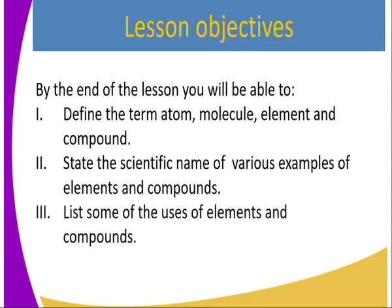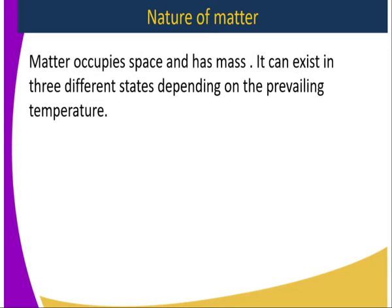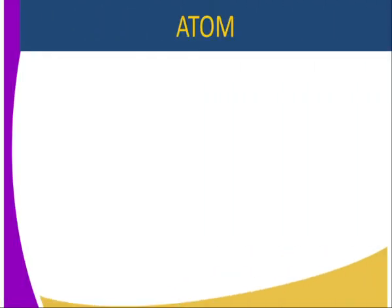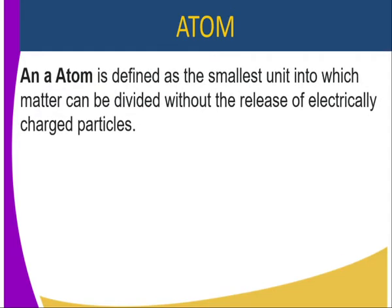It is important for us to recall the nature of matter. Any substance that occupies space and has mass can exist in three states: solid, liquid, and gas, depending on the prevailing temperature. Since matter is made up of tiny particles which are in continuous random motion — that is from the kinetic theory of matter — these tiny particles are referred to as atoms.